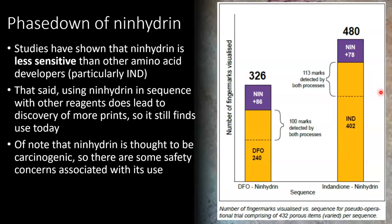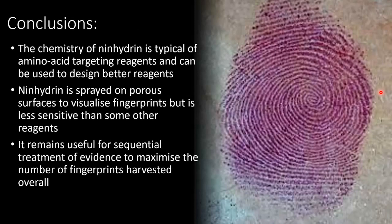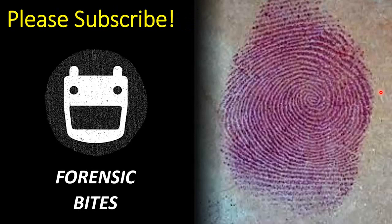One thing of note is that ninhydrin is thought to be a carcinogen, meaning it causes cancer, so there are some safety concerns associated with using it. To conclude: the chemistry of ninhydrin is typical of amino acid-targeting reagents used in fingerprint visualisation, and understanding it can help design better reagents. Ninhydrin is sprayed on porous surfaces to visualise fingerprints, but it's less sensitive than some other reagents such as indanedione. It remains useful, however, because when used in sequence with other methods, more fingerprints are visualised overall. That's all for today — thanks for listening. Please subscribe.